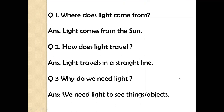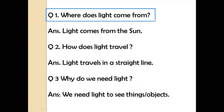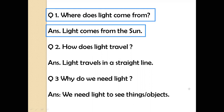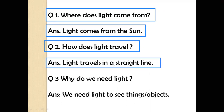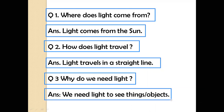Dear students, this is the exercise of question and answer. Question number 1: Where does light come from? Answer: Light comes from the sun. Number 2: How does light travel? Answer: Light travels in a straight line. Number 3: Why do we need light? Answer: We need light to see things and objects.